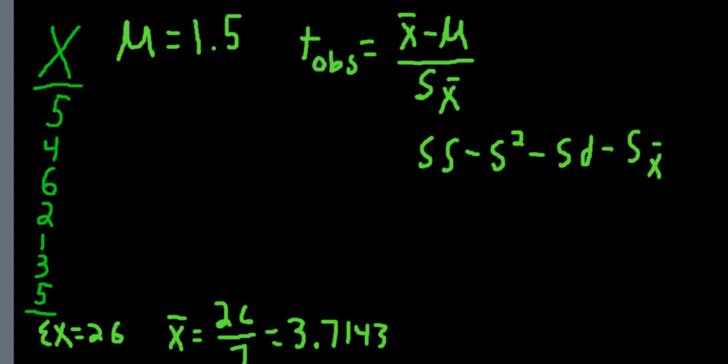So first step to compute the sum of squares is, we'll use the computational formula, which is sum of the squared x's minus sum of x squared over n. So to get the left-hand side of this equation, we're going to square up all the values for x. So we'll make a column here that is all the values for x squared.